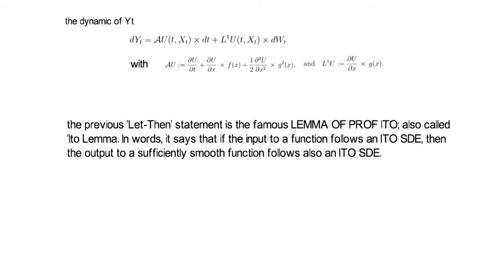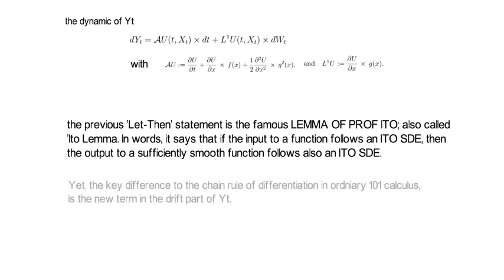The Ito rule looks very much like a standard ordinary calculus rule. If you look carefully at these formulas, the key difference to the chain rule from ordinary calculus is that additional term in the drift of Y.